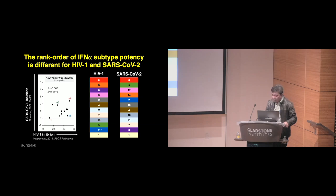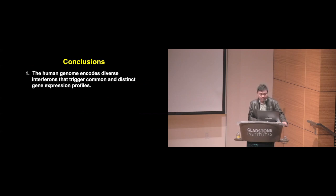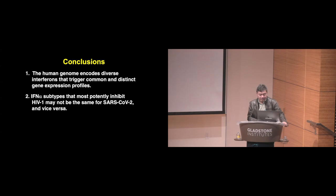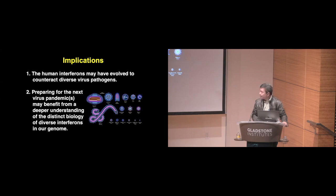To conclude: the human genome encodes diverse interferons that trigger common and distinct gene expression profiles. The subtypes of interferon alpha that most potently inhibit HIV-1 may not be the same for SARS-CoV-2 and vice versa. In data I don't have time to show, we've also found that SARS-CoV-2 may be evolving to become more resistant to interferons. Data from Beatrice Hahn and Katherine Bars' group show that HIV-1 may also resist interferons. The implications are that human interferons may have evolved to counteract diverse virus pathogens, and preparing for the next virus pandemics may benefit from a deeper understanding of their biology.